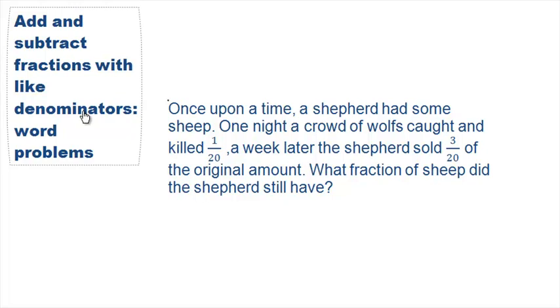This problem states, once upon a time a shepherd had some sheep. One night a crowd of wolves caught and killed 1 out of 20. A week later the shepherd sold 3 out of 20 of the original amount. What fraction of sheep did the shepherd still have?